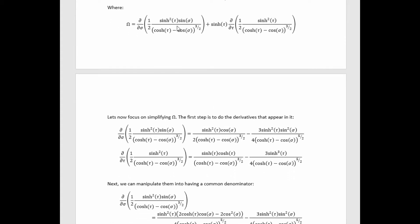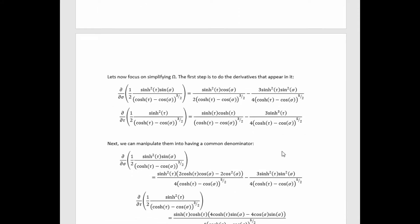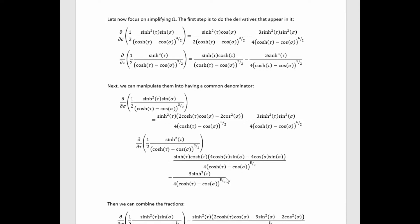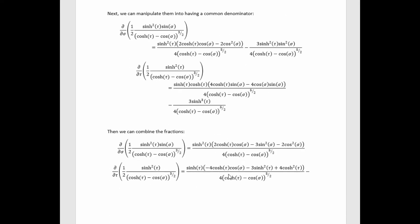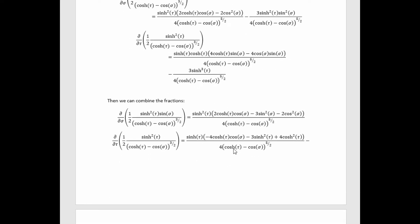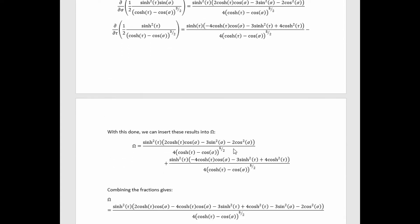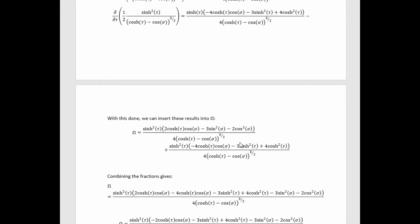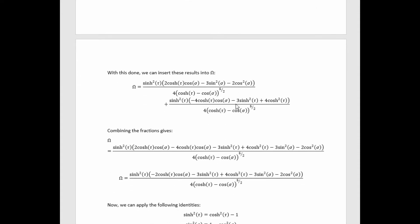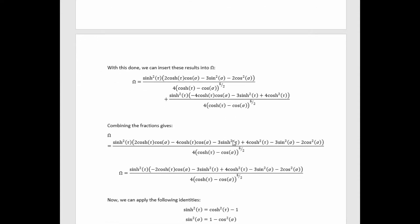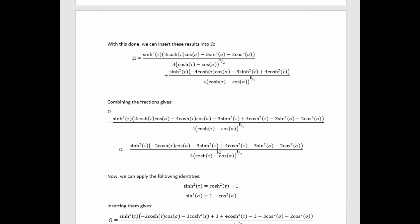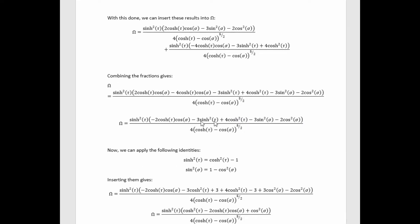We see that it's got these two derivatives in it. We can just use the product rule to compute those. We get these. Now we can manipulate them so that they have common denominators, and then we can combine the fractions given the common denominators. Then from there we can plug this back into omega and we get this result. Now we can combine these fractions because they have common denominators. That gives us this. We can combine like terms. It simplifies down to this.